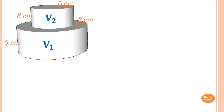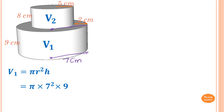For volume 1, the radius of this cylinder runs from the centre all the way to the edge: that is 5 plus another 2, which is 7 centimeters. So the volume is pi r squared h, which is pi times 7 squared times 9, giving me 1,385.44 cubic centimeters.